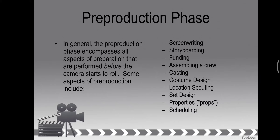In general, the pre-production phase encompasses all aspects of preparation performed before the camera starts to roll. That's why we call this pre-production — we are settling everything before the camera rolls. Some aspects of pre-production include screenwriting, storyboarding, funding, assembling a crew, casting, costume design, location scouting, set design, props, and scheduling. This is all about proper organization — the people behind the pre-production phase are really essential for the success of the film. They are the main organizers.